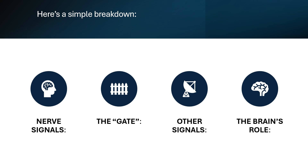You can also get other signals — non-painful signals, like when you rub your skin or when you get up and move. These also travel to the spinal cord and these signals can close the gate, reducing the amount of pain you feel. Think about when you hit your funny bone on your elbow — you will automatically bring it in and rub it, and the pain will decrease.